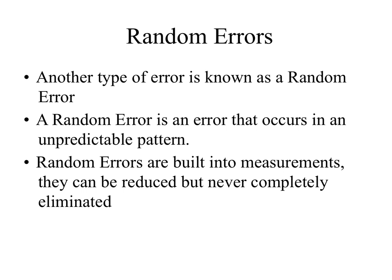In addition to systematic errors, there's another class called random errors. Random errors are errors that occur in unpredictable patterns; they are built into measurements, can be reduced, but can never be completely eliminated. When designing an experiment, you want to look for sources of these errors, and if you can't eliminate them you can at least use them to determine how precise and repeatable your experiments are.